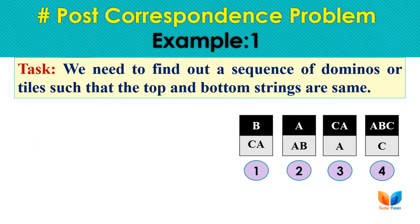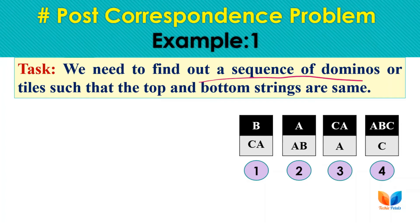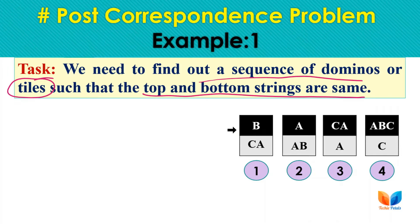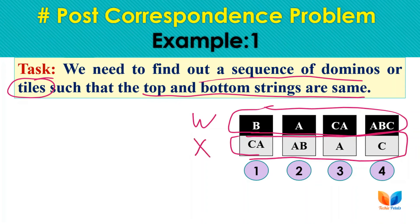For the Post Correspondence Problem, let us understand it with an example, because with the definition alone you won't understand, but with an example you can also understand the definition. We have a task: we need to find a sequence of dominoes or tiles such that the top and bottom strings are the same. We are given two sets of strings — we call the first set W and the second set X.